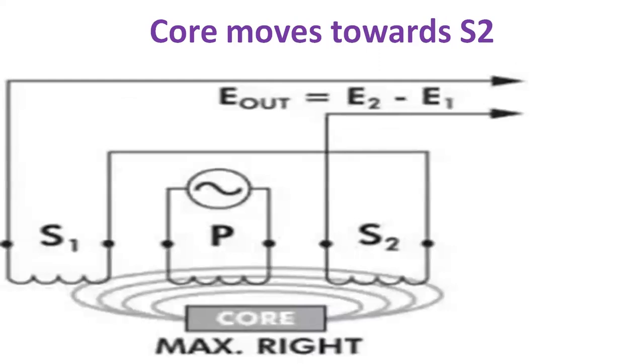The third case is when the core moves towards S2, that is to the maximum right. When the core of LVDT is moving towards secondary winding S2, then in this case, the flux linkage mostly is with S2 and will be more as compared to S1, which means the EMF induced in S2 will be more than the induced EMF in S1. Hence, E2 is greater than E1 and net differential voltage E0 is equal to E1 minus E2, that is negative, or E2 minus E1, which means the output voltage E0 will be in phase opposition, 180 degrees out of phase with the primary voltage.